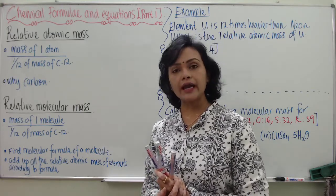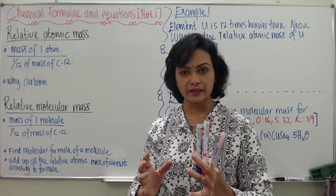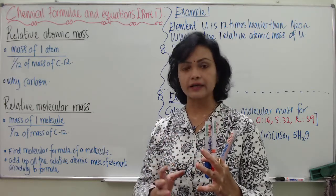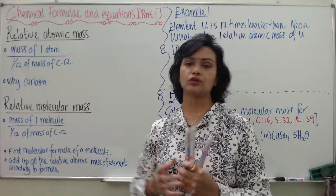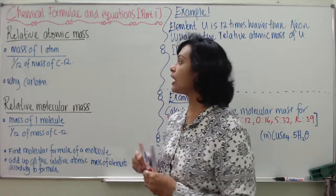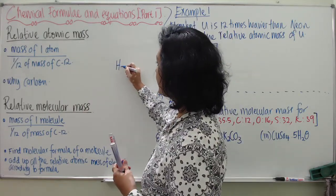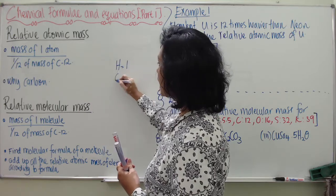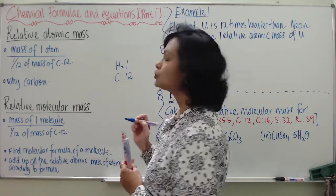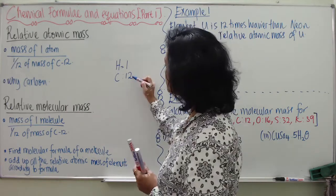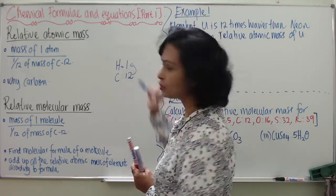We relate the mass of one atom to a certain selected atom. For instance, Hydrogen has a mass of 1, and Carbon has a mass of 12. So we can say Carbon is 12 times heavier than Hydrogen.